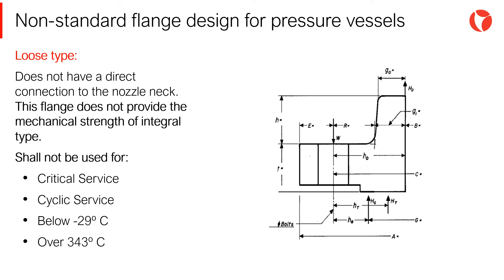Loose type flanges do not have a direct connection to the nozzle neck. This method of attachment is not considered to give the mechanical strength equivalent of integral attachment. Flanges that fall under this category shall not be used for certain services.